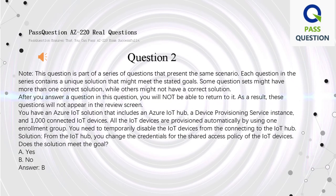Question 2. Note: this question is part of a series of questions that present the same scenario. Each question in the series contains a unique solution that might meet the stated goals. Some question sets might have more than one correct solution, while others might not have a correct solution. After you answer a question, you will not be able to return to it. As a result, these questions will not appear in the review screen.